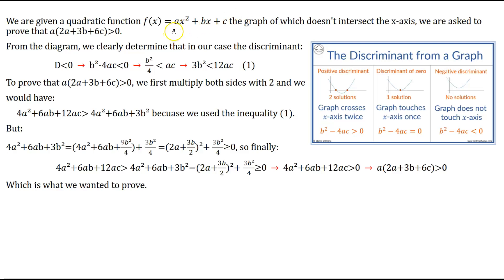So we are given the quadratic function ax² + bx + c, the graph of which doesn't intersect the x-axis. We are asked to prove the inequality with the coefficients of this quadratic function that says a(2a + 3b + 6c) > 0.